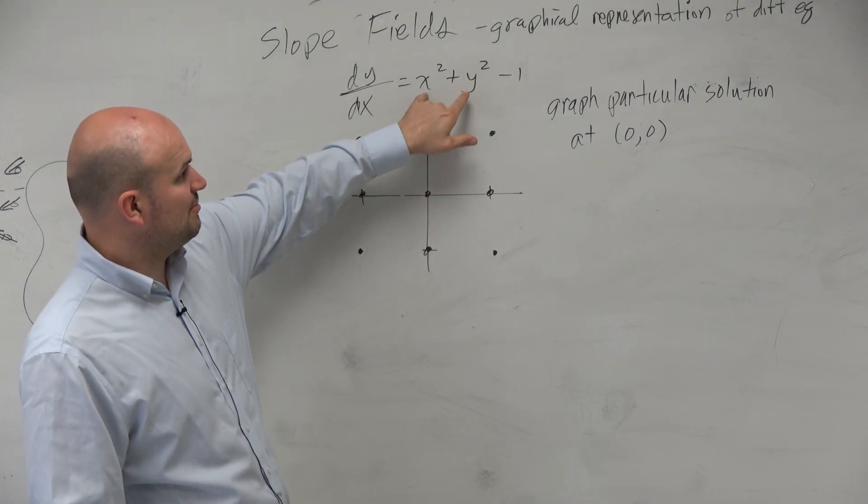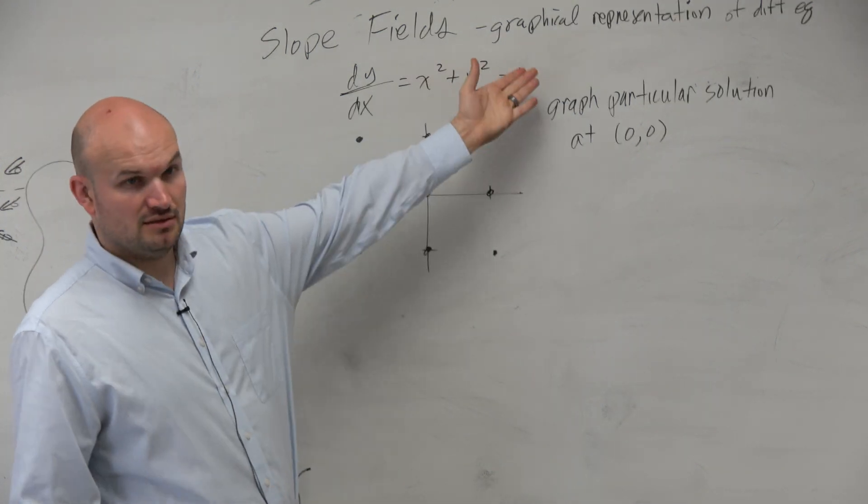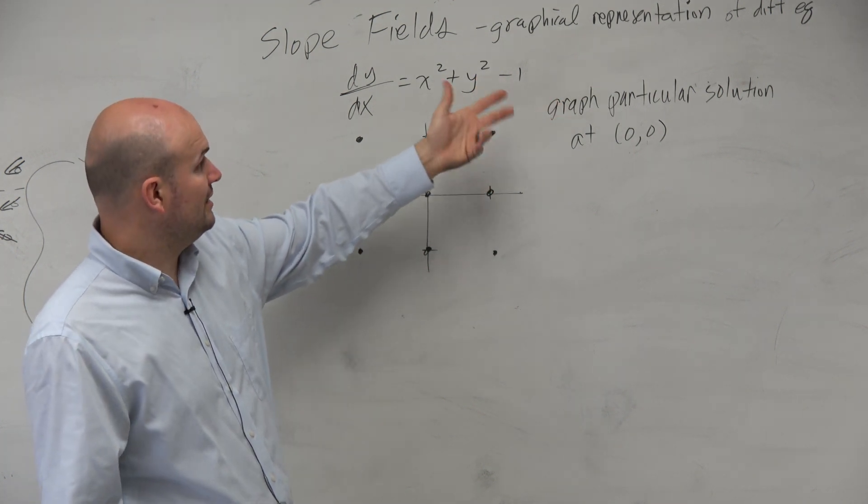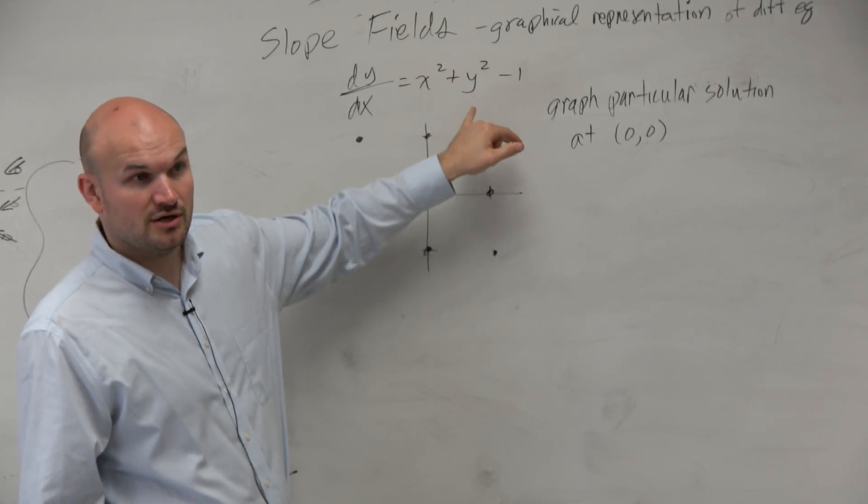But I can say, well, when x squared plus y squared is equal to 1, then I'm subtracting 1. So when is it going to be equal to 1? Well, it will be equal to 1 when at least one of these is 1 and the other one is 0, right?